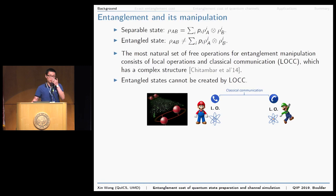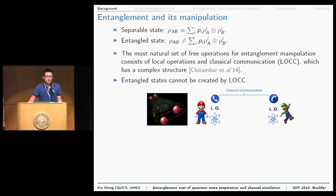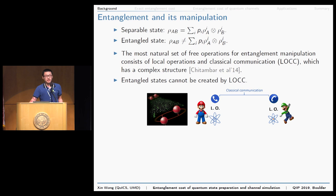Entanglement is central to quantum information science, and I'll begin with a very brief introduction to entanglement theory. Roughly speaking, a bipartite quantum state is called entangled if it cannot be written as a sum of product states. In entanglement theory, the most natural set of free operations for entanglement manipulation consists of local operations and classical communication, also known as LOCC, and this set of operations has a very complicated structure. Entangled states cannot be created by LOCC, so entangled states are considered as quantum resources.